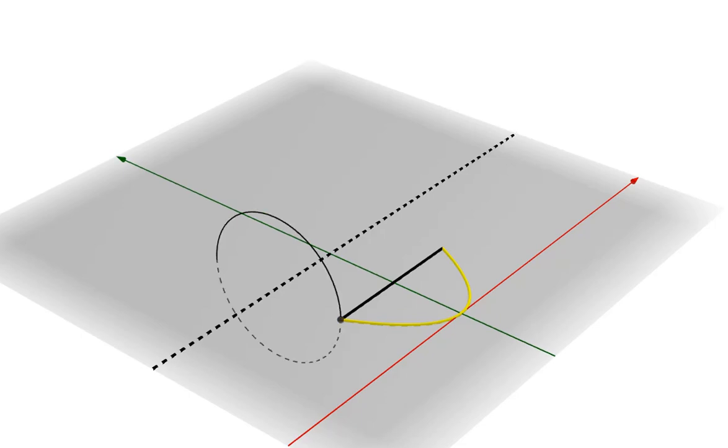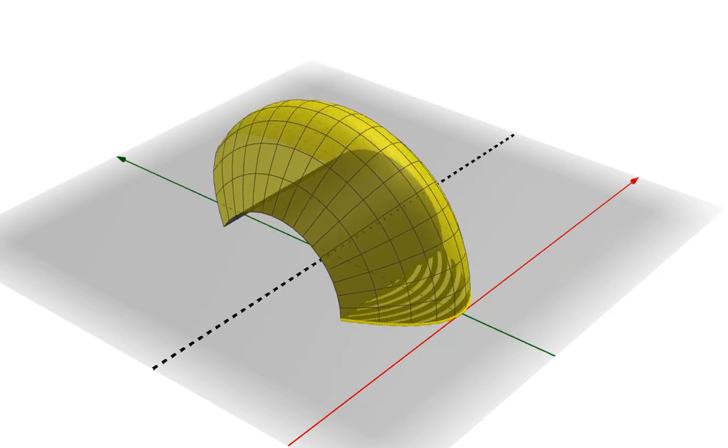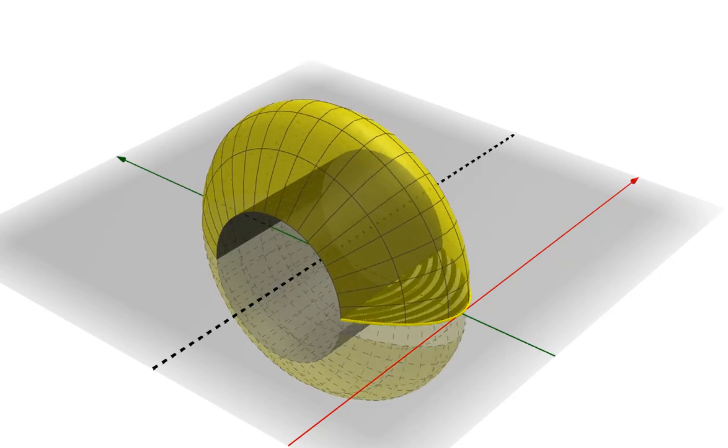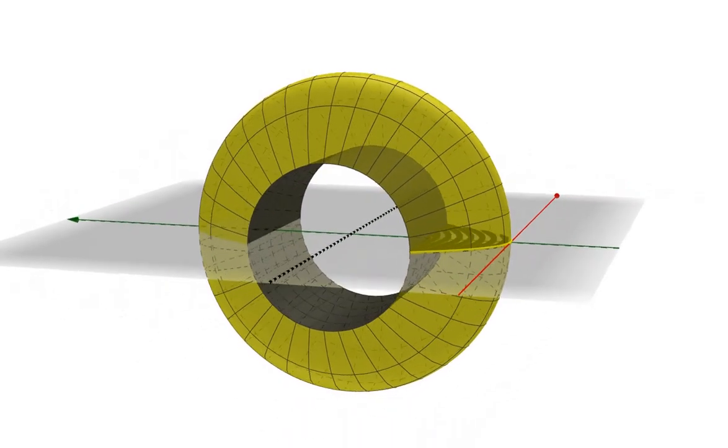If you take a single point, you can see that it spins in a circle. But can you see what will happen when you spin this entire solid region around the dotted line? Try to find the volume of this solid.